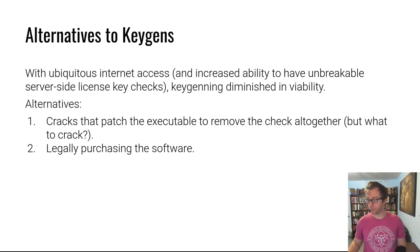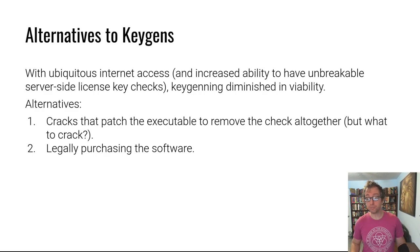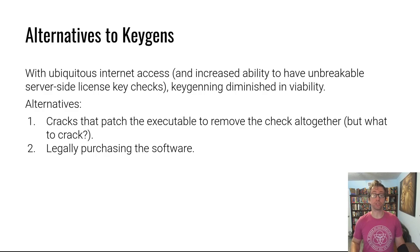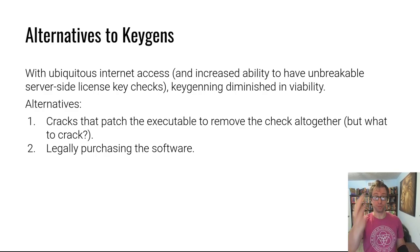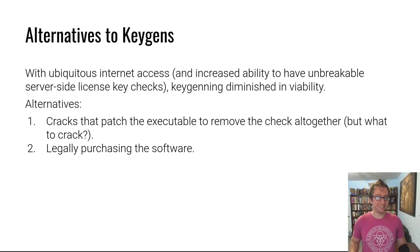Alternatives started coming out. One is: you reverse engineer the software until you truly understand how the license check works, and then you simply patch it out — disable it, replace that part of the code with no-ops. Of course you have to understand it quite clearly. The other option — which I highly recommend — because the developers are trying to make a living to bring you more awesome software, is just buy the software.